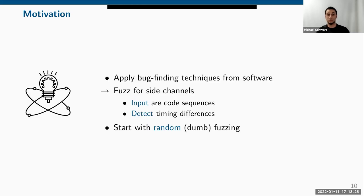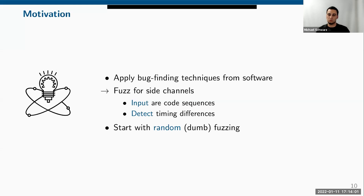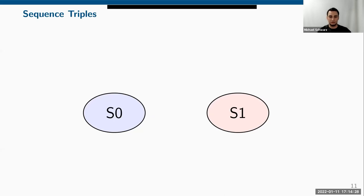One idea is to apply techniques from software to hardware. In software, when we have complex systems with bugs, manual analysis doesn't scale. We use techniques like fuzzing to automatically generate inputs that trigger bugs and vulnerabilities we can then fix. We can apply these techniques to the CPU. For software, inputs trigger crashes; for CPUs, the inputs are code sequences and we observe timing differences — we treat those timing differences like bugs.